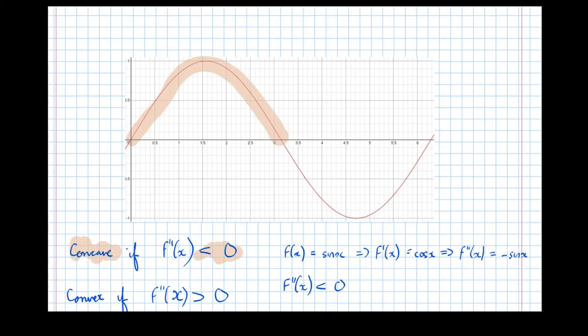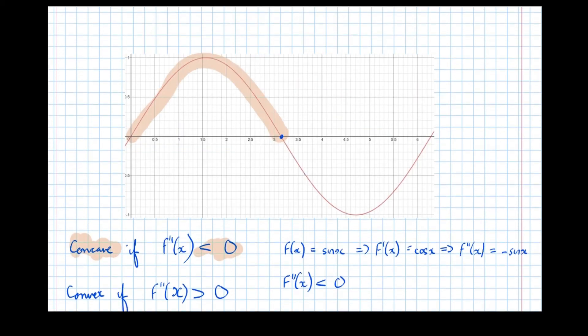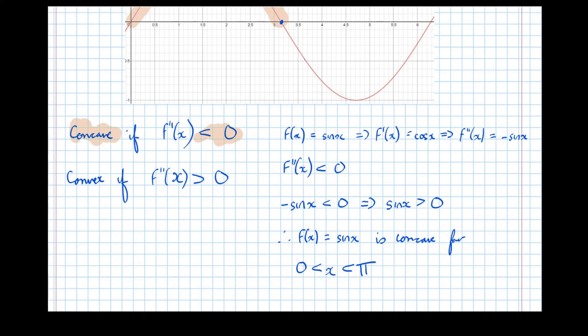Now it's important to point out that at this point here, the graph's neither concave nor convex. It's changing from being concave to convex. Now we're going to go through this in a later video, but a name for a point like that, where the graph turns from being concave to convex, where it's neither, it's at the turning point of being concave and convex, it's called a point of inflection. And that's what we're going to go through in a later video.